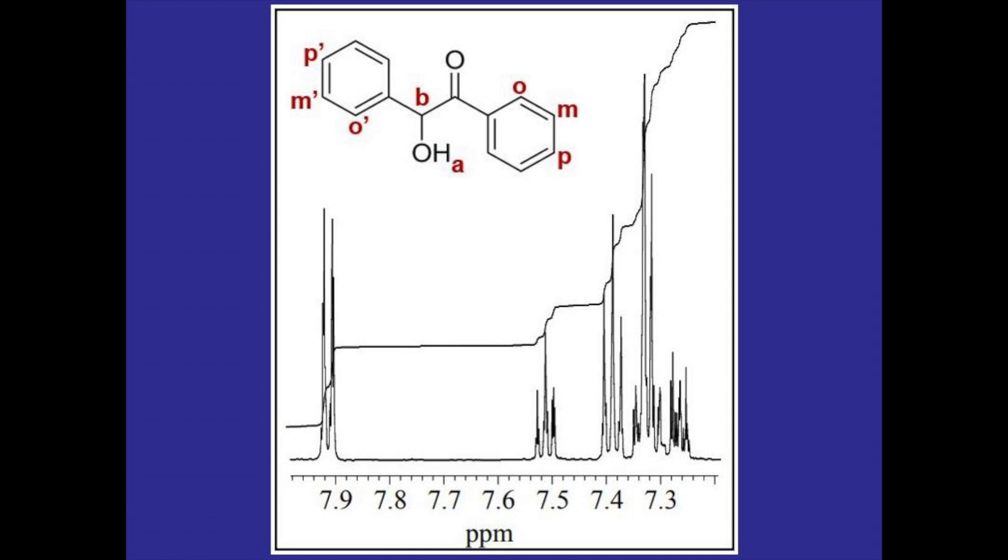So to get started I'm actually going to look at the zoom in section first and before I start analyzing any peaks I'm going to recognize that the ketone is going to act as an electron withdrawing group for the aromatic ring on the right so I can draw in the partial positives on the ortho and para positions.